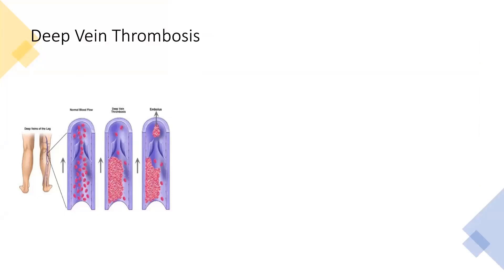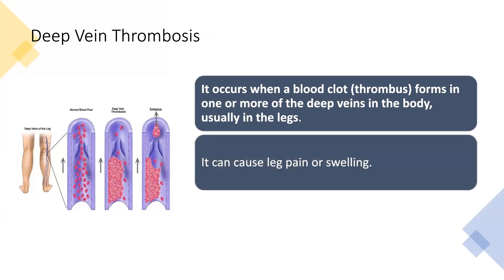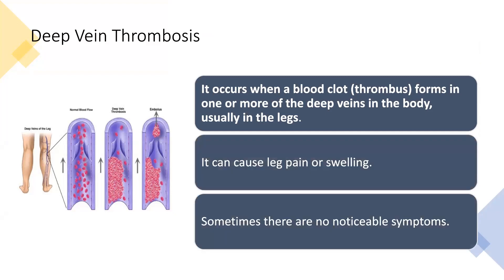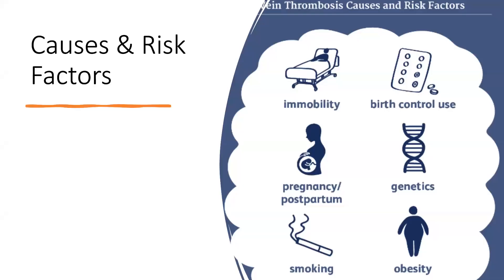Deep vein thrombosis (DVT) occurs when a blood clot or thrombus forms in one or more deep veins, usually in the legs, causing leg pain or swelling — sometimes with no noticeable symptoms. Signs include swelling of the leg or calf, pain worsening when standing or walking, and warmth and redness. Risk factors include immobility, birth control pills, pregnancy, postpartum state, genetics, smoking, and obesity.